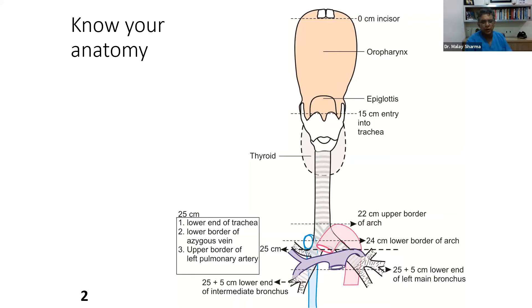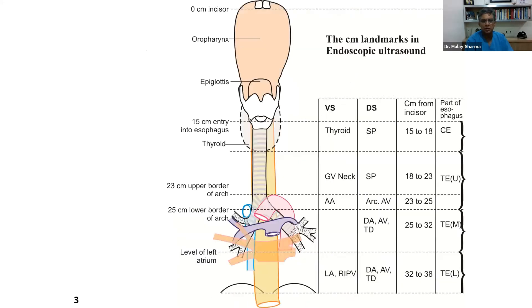These are the important landmarks. At around 25 centimeter distance, a lot of things are there - the lower border of azygos vein, lower end of trachea, and pulmonary artery. But these landmarks will become familiar and important to you once the mind knows that these are the structures. Then you start imagining what lies anterior to esophagus, what lies posterior to esophagus, what lies to the right and left - mainly the lung, but anterior-posterior relationships as shown in this figure are the important landmarks that you start seeing.